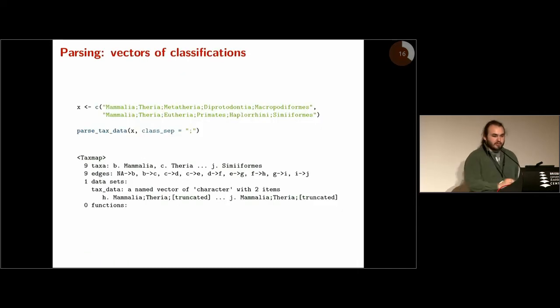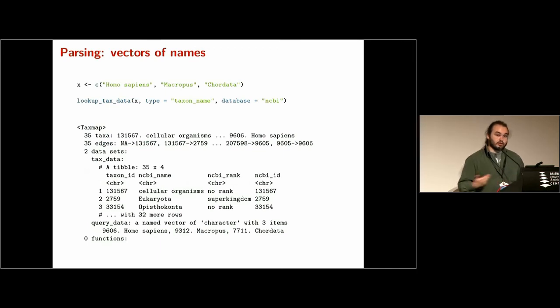I'll show you some examples of how you read in different formats. If you have a vector of classifications, you use parse_tax_data and give it a separator, and it will spit out a taxmap object. It will generate arbitrary IDs because taxa can have the same name - taxa names are not unique. And the original input data is included in the object as one of these user-defined data sets. If you have a vector of names, it will look this information up from a database - in this case we're using NCBI, but you can use other databases. You need an internet connection for this. And you say it's a taxon name. Now we're not using those arbitrary IDs anymore, we're using NCBI's IDs. And other information that was looked up associated with these taxa is added in this tax_data table, and our original input is also here.